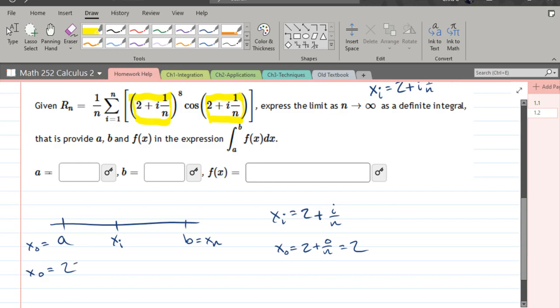And b is our xn, the final value. Let's figure out what xn is. We replace i by n, giving 2 plus n over n. Reducing that fraction gives 2 plus 1, which is 3. So b equals 3, and that's our a and b values.